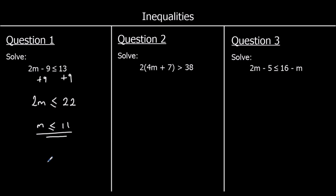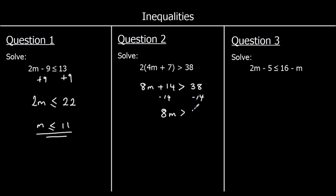Question two: expand the bracket first. 2(4m + 7) gives 8m + 14. So 8m + 14 > 38. Taking away 14 from both sides gives 8m > 24. Dividing both sides by 8 gives m > 3.